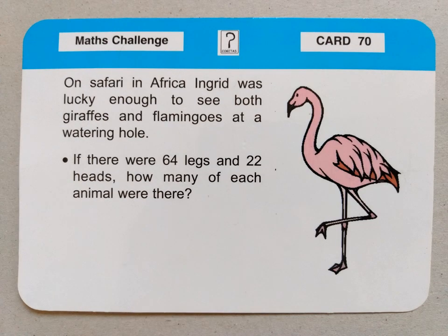The next challenge card — I'll read it through with you. On safari in Africa, Ingrid was lucky enough to see both giraffes and flamingos at a watering hole. If there were 64 legs and 22 heads, how many of each animal were there? So we need a bit of science understanding: giraffes are four-legged animals and flamingos are two-legged animals. Don't be confused by the fact that flamingos sometimes stand on one leg — they've got two. The clues are 64 legs total, with some from the four-legged and some from the two-legged animals, and 22 heads. Out of those 22, how many were two-legged and how many were four-legged?